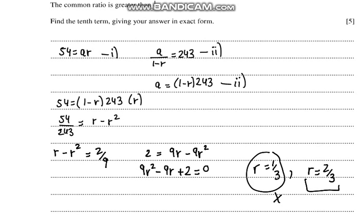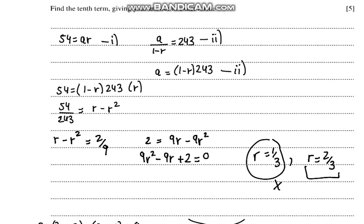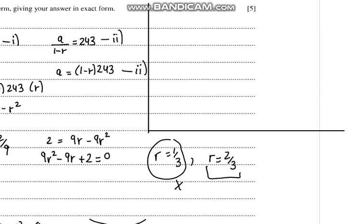Now if the value of r is 2/3, then a becomes: ar equals 54, so a becomes 54 divided by r, which is 2/3. So this would equal 81.